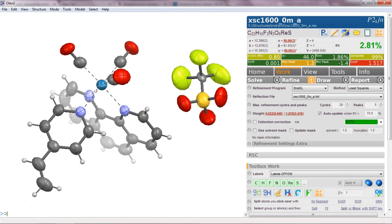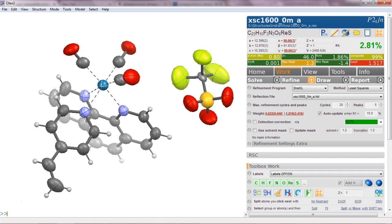Here's a nice example of a triflate disorder and I show you how the current version of Olex 2 could handle this problem. So let's first have a look at what we've got. So this is the structure.